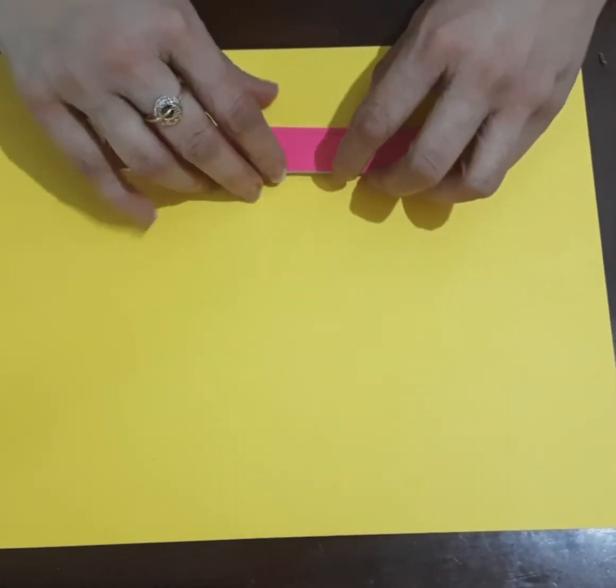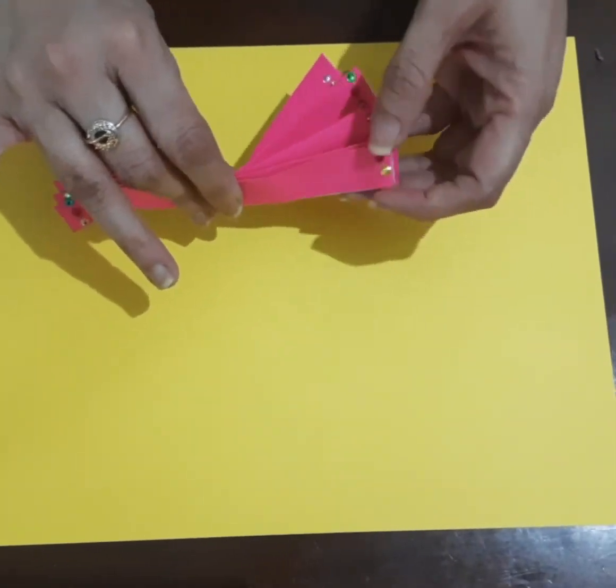Press them so that you get good pleats. Now when you open them, you will see that the wings of the butterfly are made.